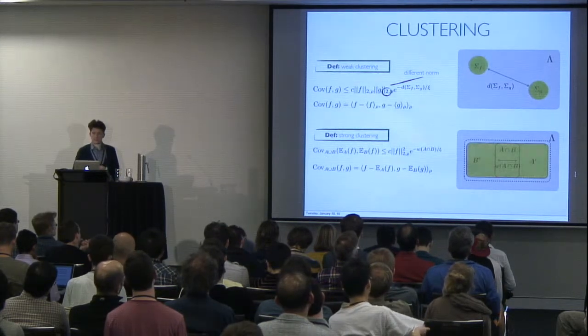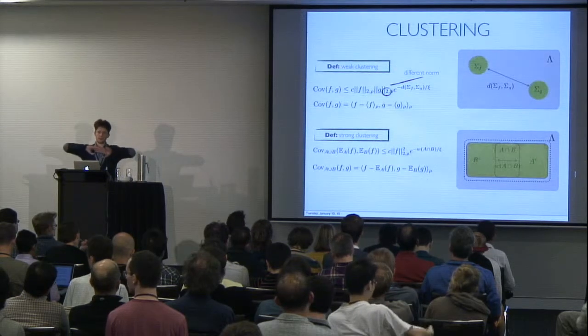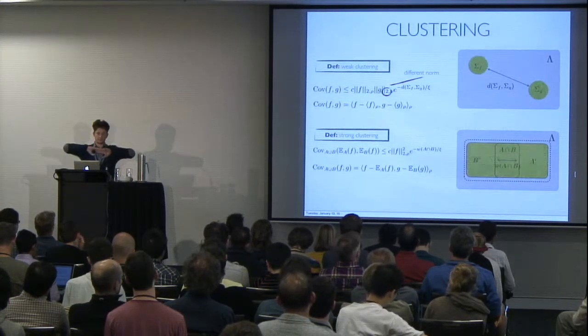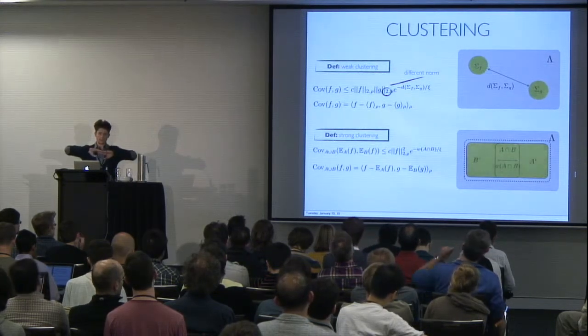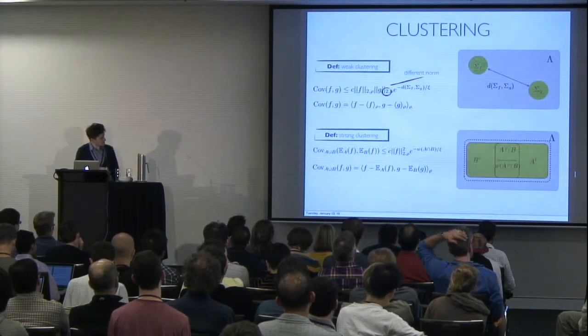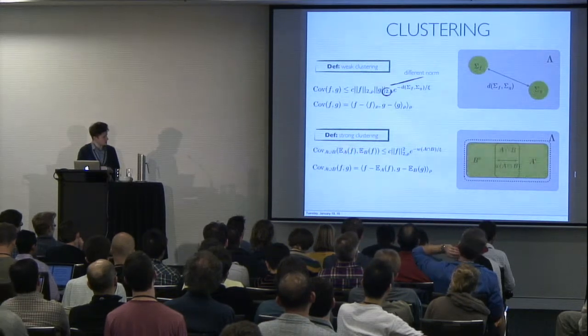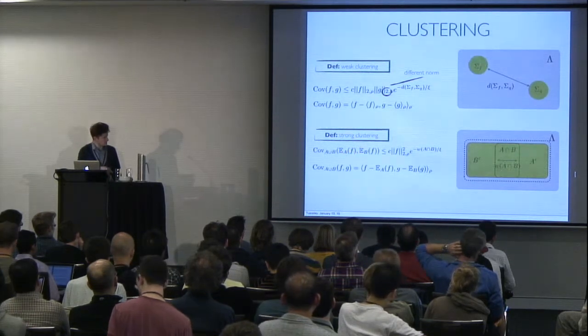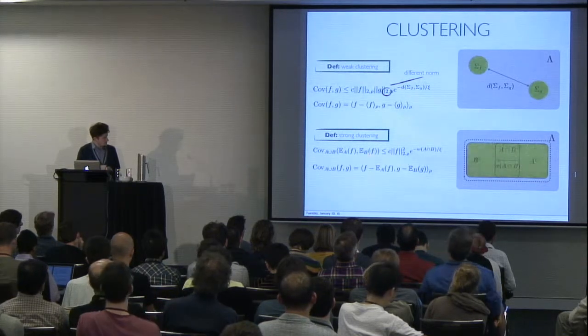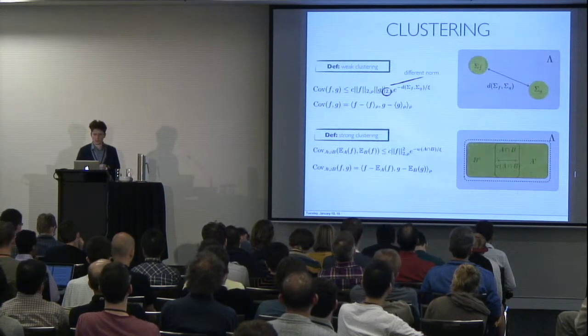And the condition that we call strong clustering is that if the overlap is large enough, then the correlation between the local projection onto the Gibbs state on subset A compared to the local projection of the Gibbs state on subset B is going to be very, very small.